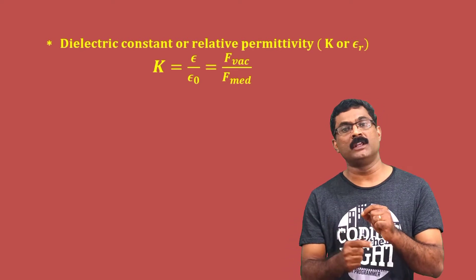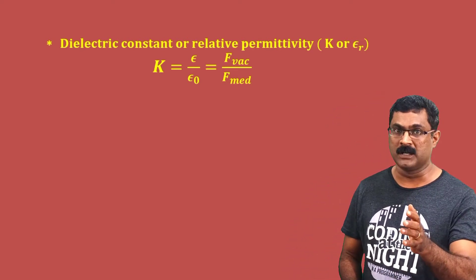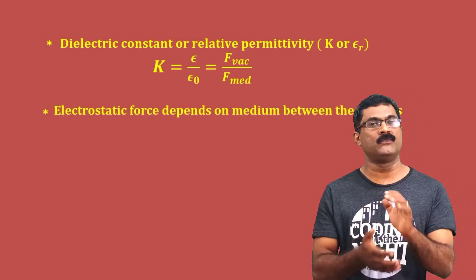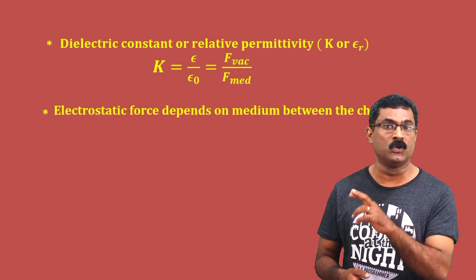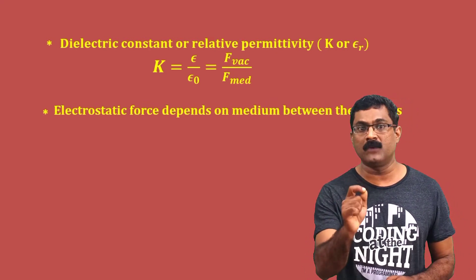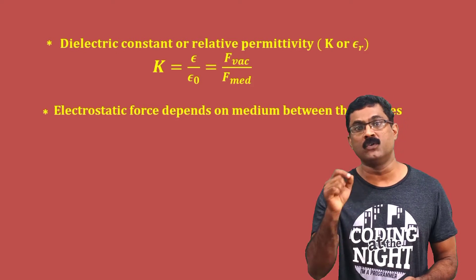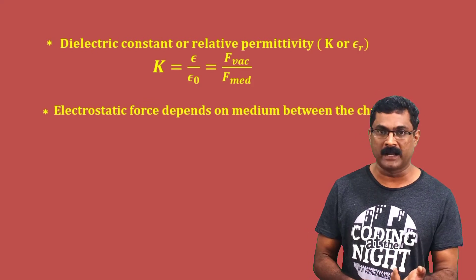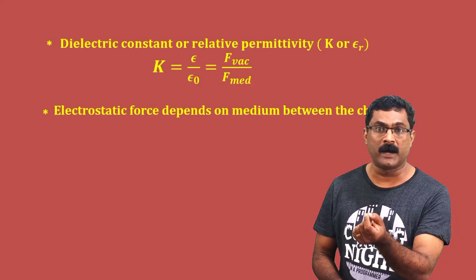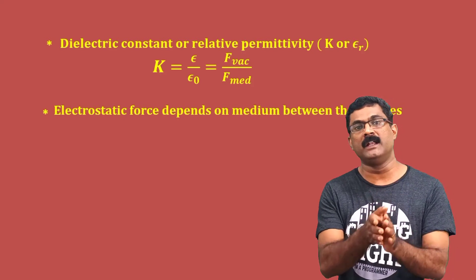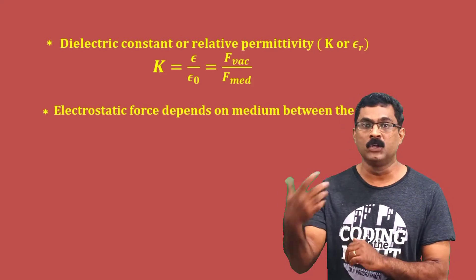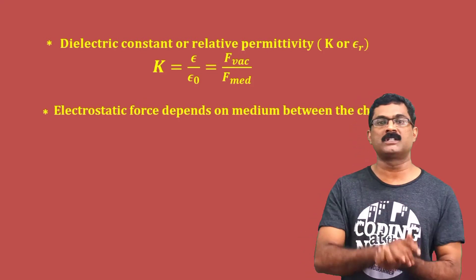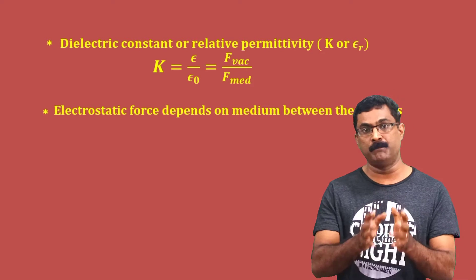If you have a medium, the equation for electrostatic force is 1 by 4π epsilon₀ q1 q2 divided by r square for force in air or vacuum. If you have a medium, epsilon₀ is replaced by epsilon, so the force in medium is 1 by 4π epsilon times q1 q2 divided by r square. The electrostatic force between two charges depends on the medium.